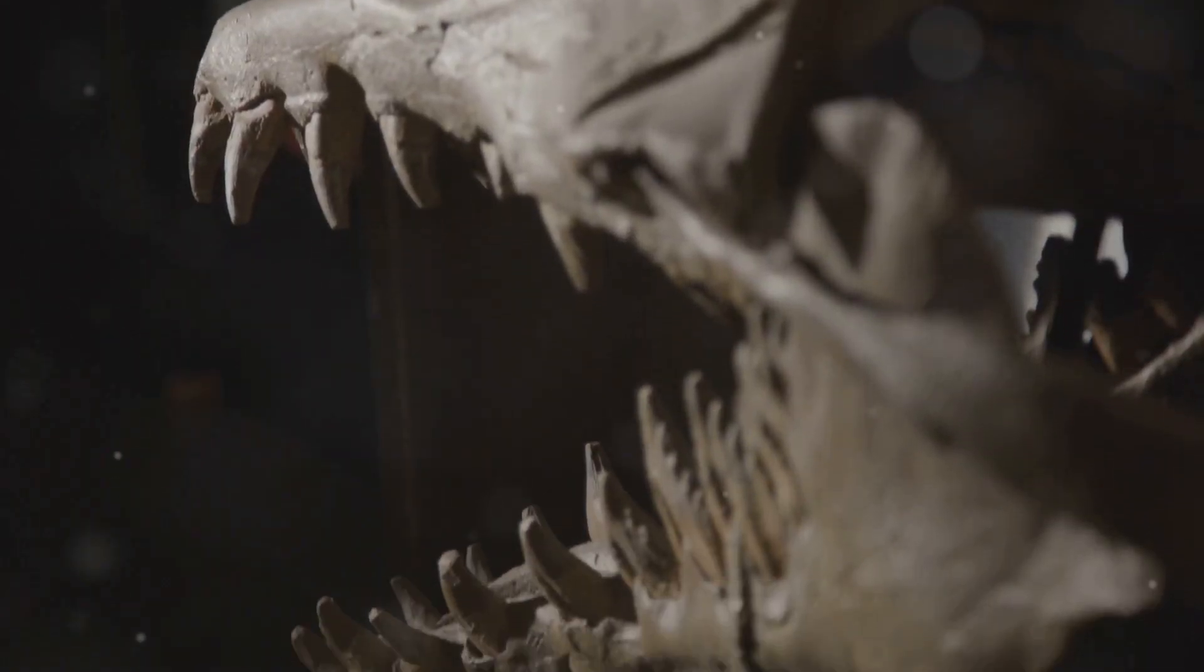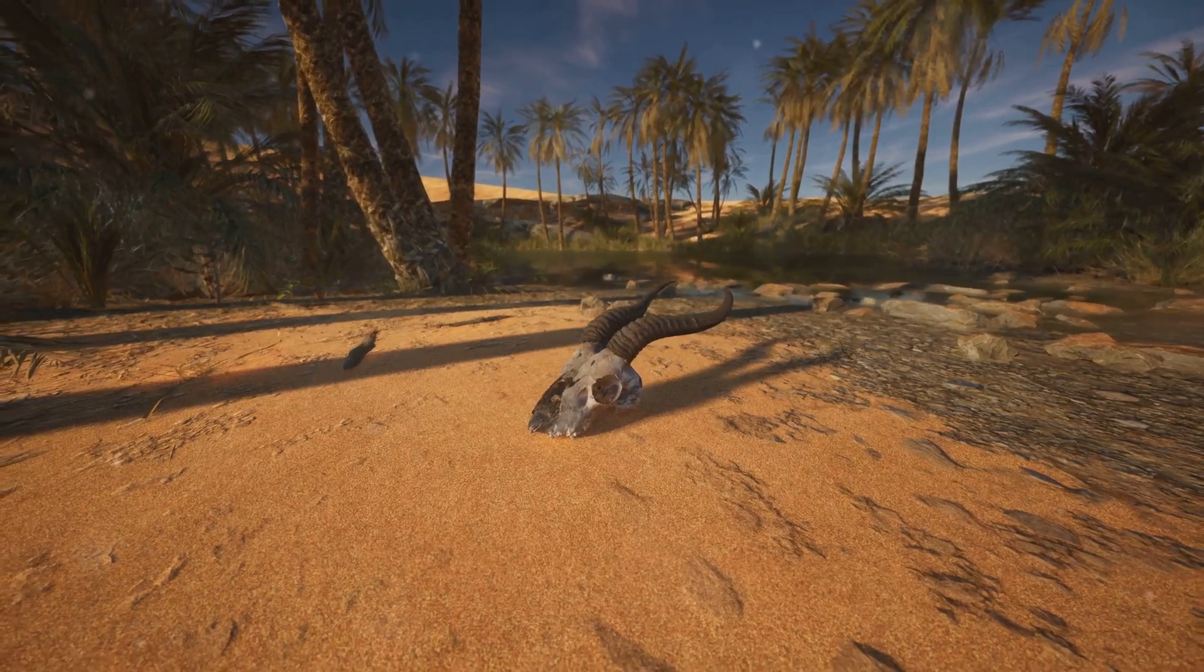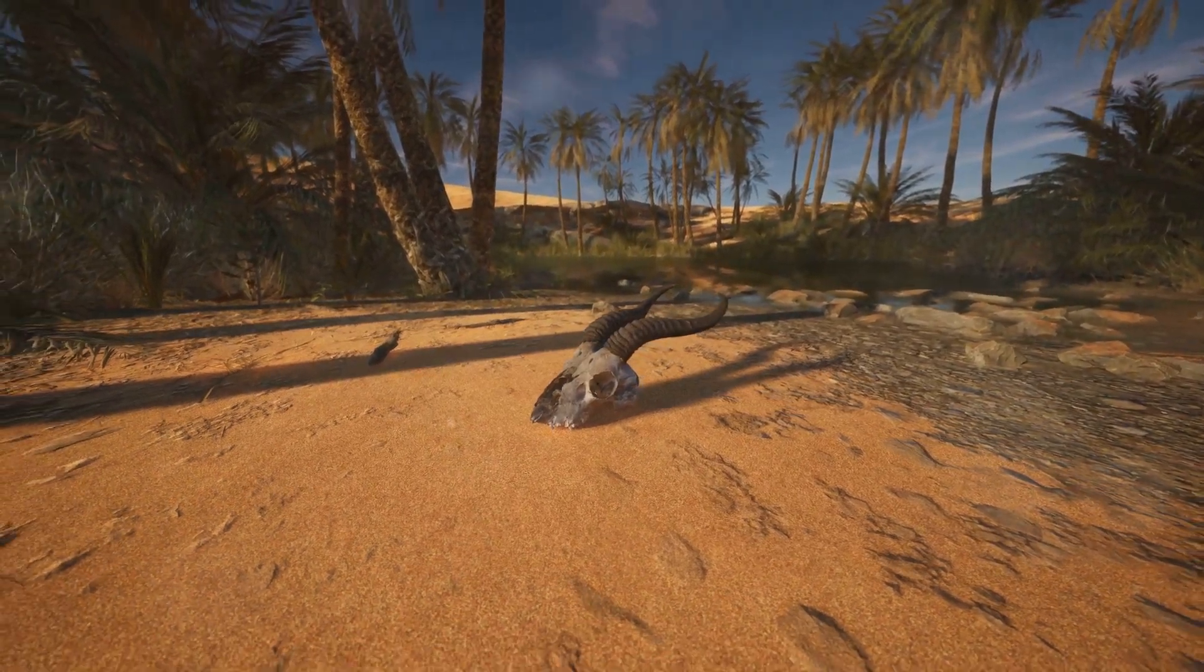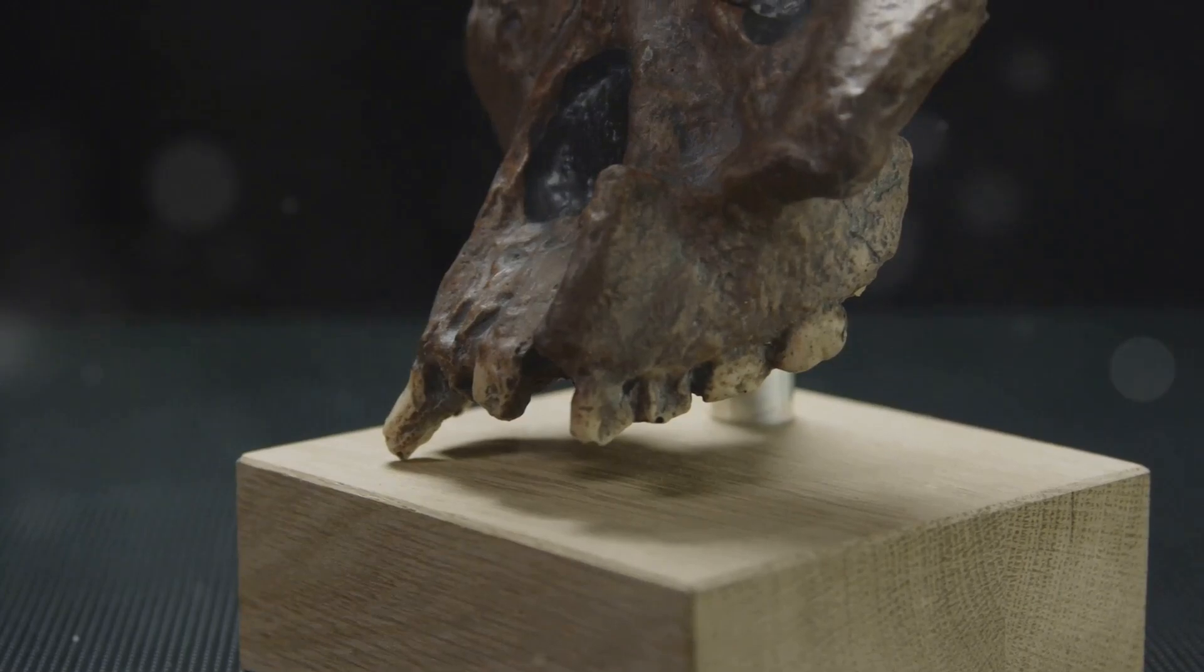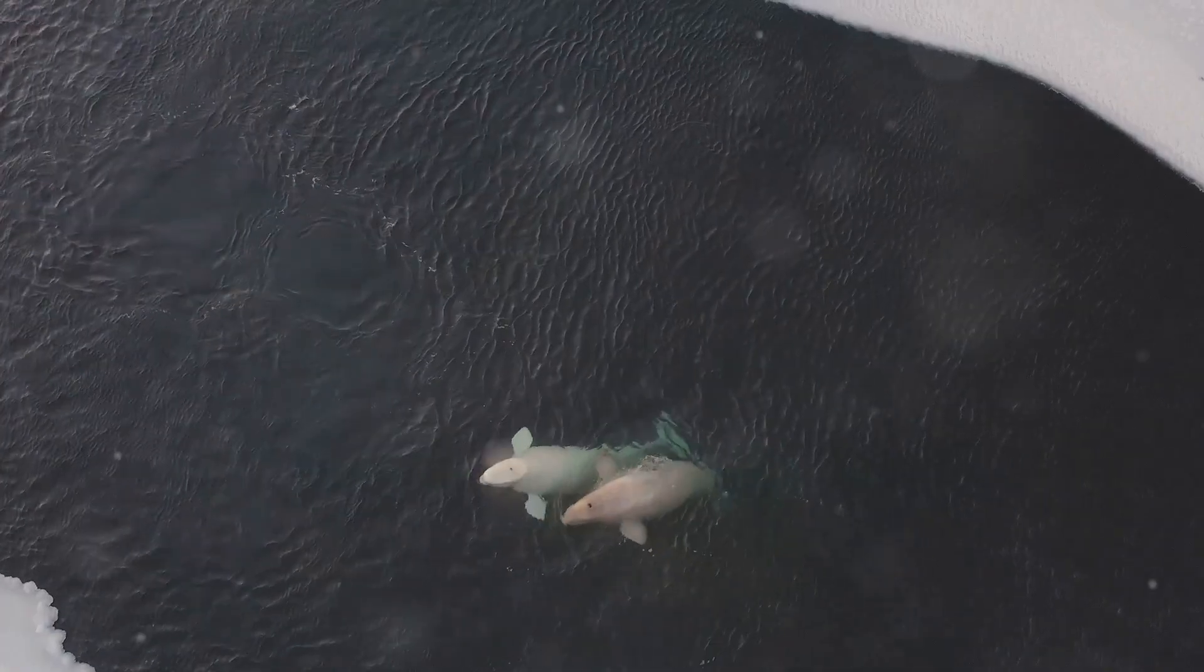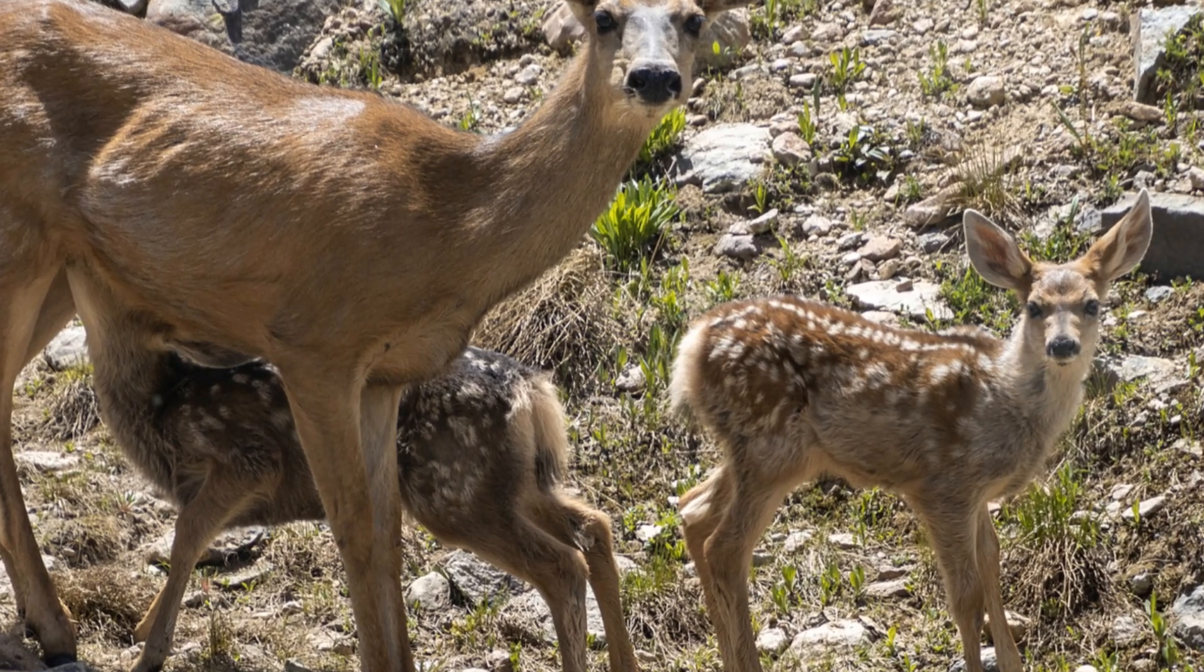With the dinosaurs gone, mammals were free to diversify and evolve, filling the ecological niches left vacant by their predecessors. They spread across the continents, evolving into a dazzling array of forms, from tiny shrews to giant whales, from swift predators to gentle grazers.